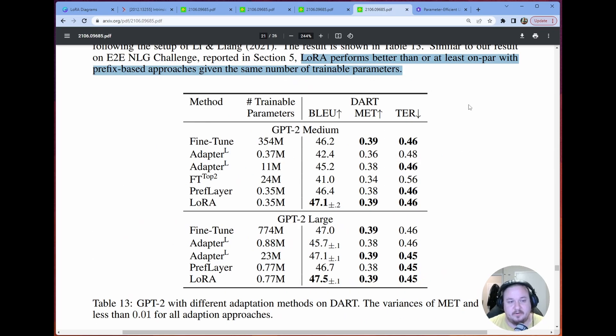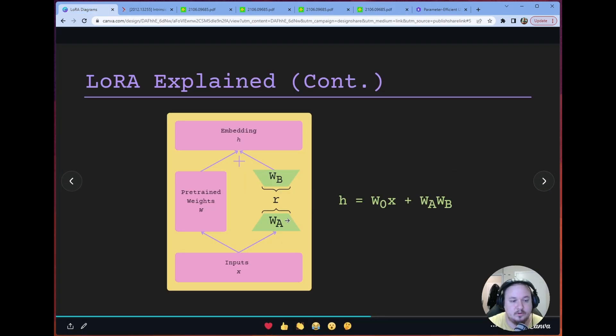But anyway, moving on from that, let's look at some more results. These are kind of my favorite results, where we find that LoRa performs better than, or at least as good as prefix-based approaches, given the same number of parameters. I really think this is cool because again, there's downside to a lot of these other kind of adaptory methods, where we're adding something to the model. But with LoRa, we're just injecting these matrices. That's like the addition we're making. And we don't even need to keep that addition. We can just straight get rid of it. Now, we don't need to.